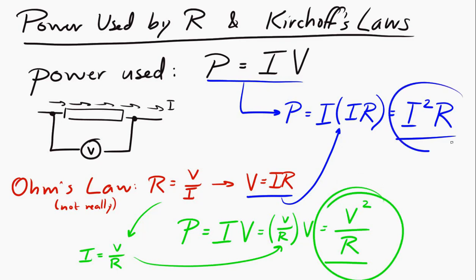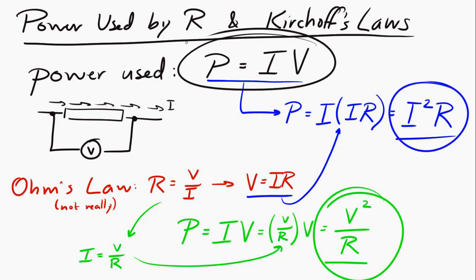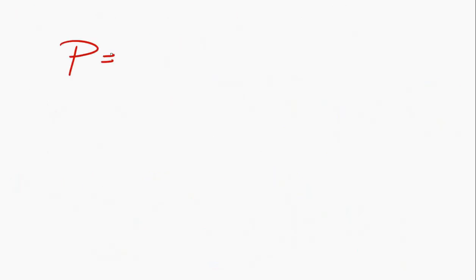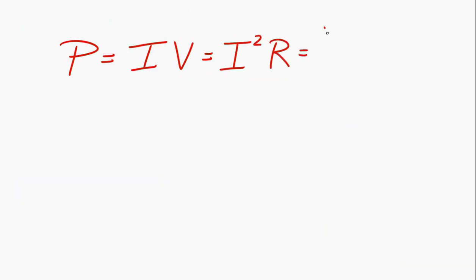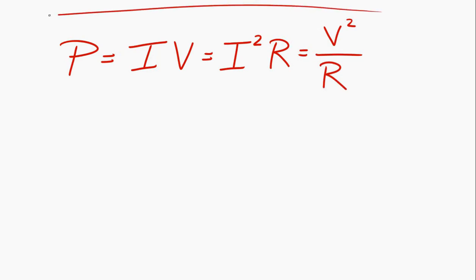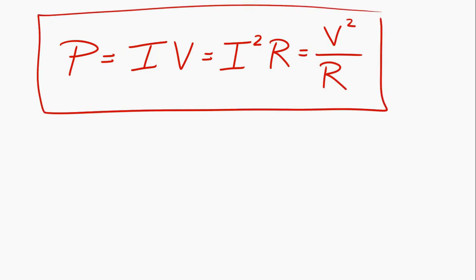This can all be combined into a single expression: power equals current times potential difference, which equals current squared times resistance, which equals potential difference squared divided by resistance. Let's move on to Kirchhoff's Laws. There are two laws, often called the junction rule and the loop rule.